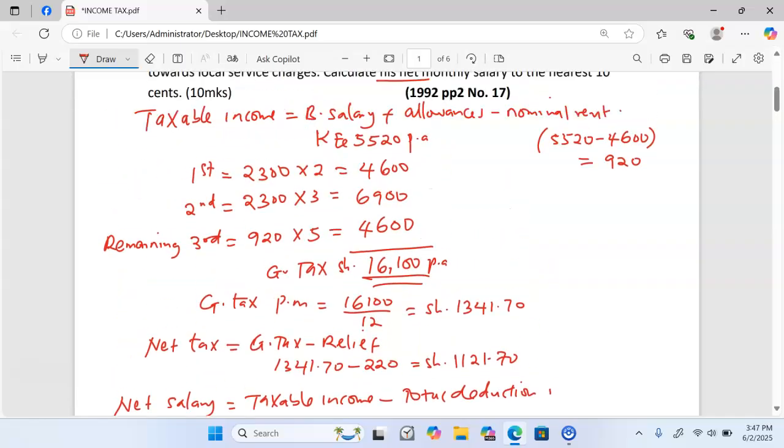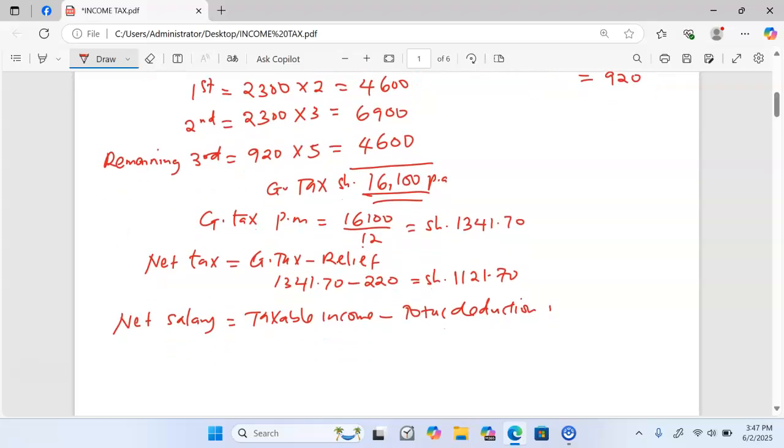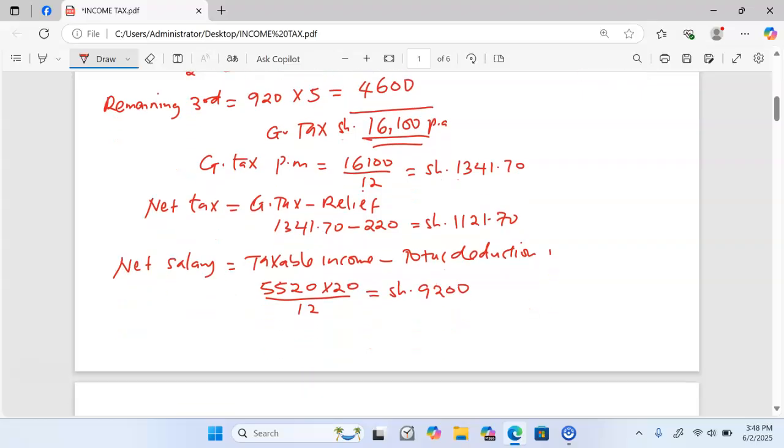The taxable income of 5,520 Kenyan pounds is converted to Kenyan shillings and divided by 12 to get the monthly amount of 9,200 shillings. Now we can calculate the total deductions.